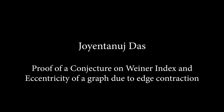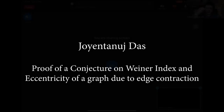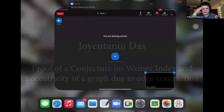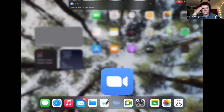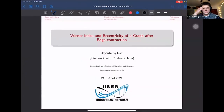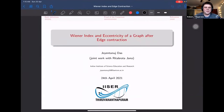Our first speaker for this session is Joyan Tanujdas from the Indian Institute of Science, Education and Research, who will be telling us about the proof of a conjecture on Wiener index and eccentricity of a graph due to edge contraction. Let's hand it off to our speaker.